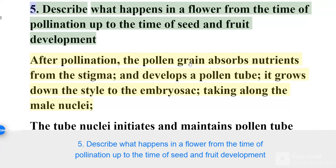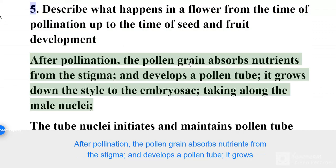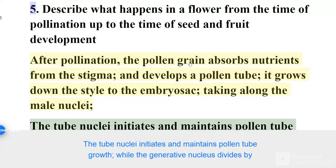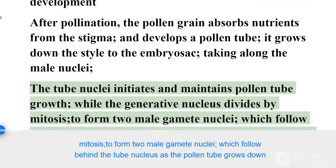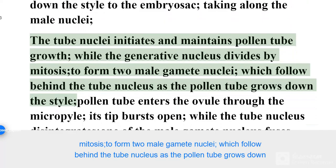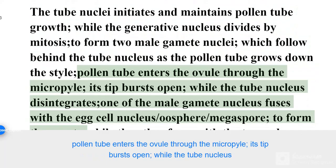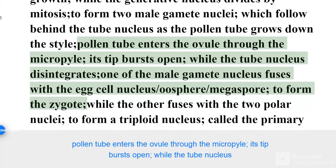Describe what happens in a flower from the time of pollination up to the time of seed and fruit development. After pollination, the pollen grain absorbs nutrients from the stigma and develops a pollen tube. It grows down the style to the embryo sac, taking along the male nuclei. The tube nucleus initiates and maintains pollen tube growth, while the generative nucleus divides by mitosis to form two male gamete nuclei, which follow behind the tube nucleus as the pollen tube grows down the style.